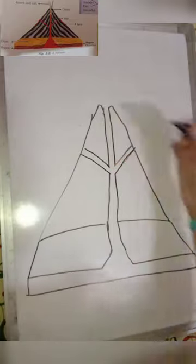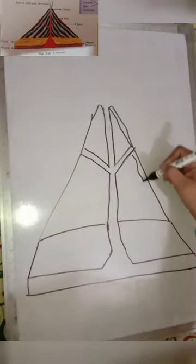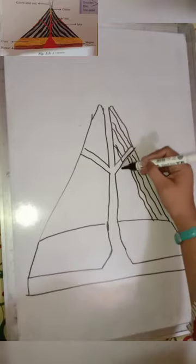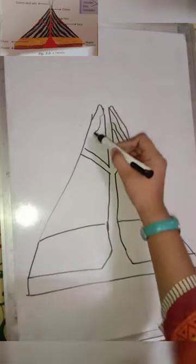Fresh volcanic ash made of pulverized rock can be harsh, acidic, gritty, gassy, and smelly. The ash can cause damage to the lungs of older people, babies, and people with respiratory problems.